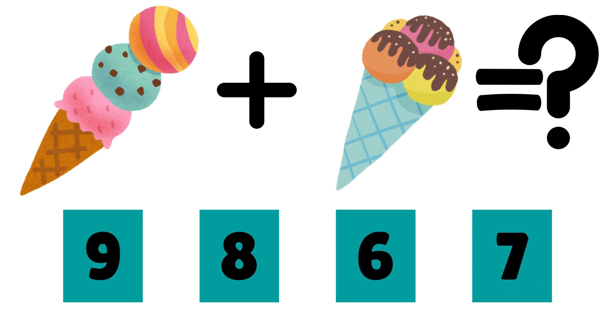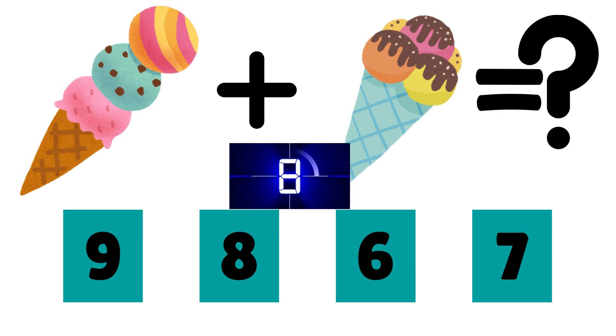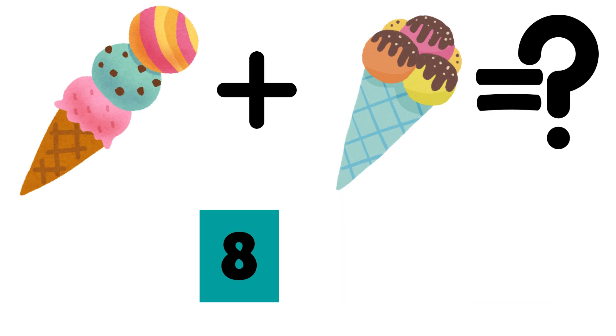Who wants ice cream? There are three scoops on the cone and five scoops on the cone. How many scoops are there in total? The answer is eight. Three plus five is equal to eight. Sweet math, right?